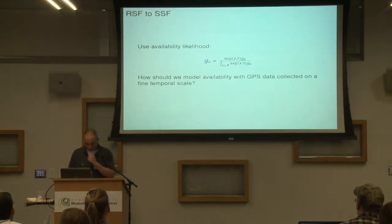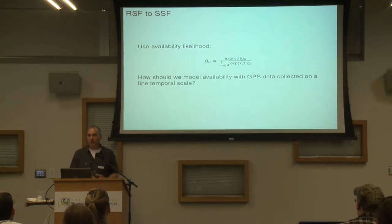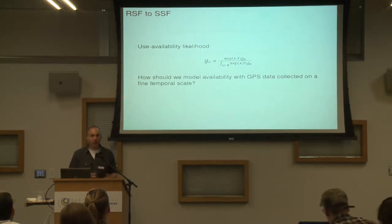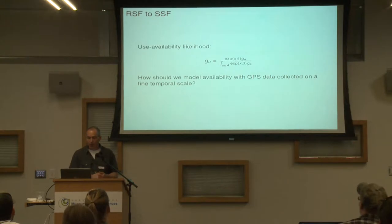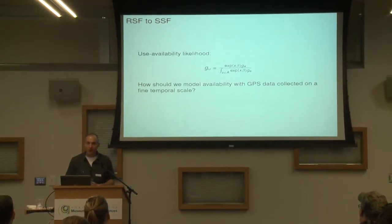RSFs became a common approach to analyzing data because you could just define your home range and then sample available points within that home range and assume at any given time the animal could have been at any of those points. But with GPS data, now we have locations every two minutes.